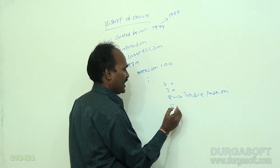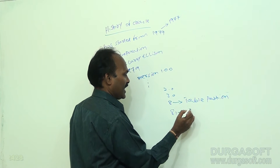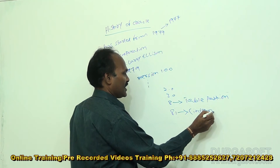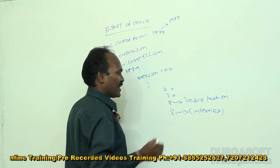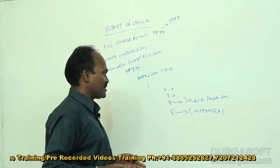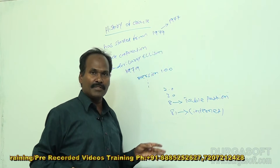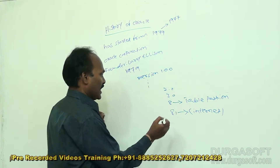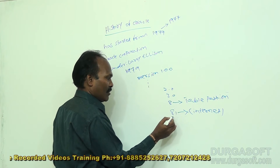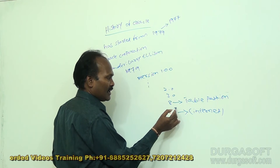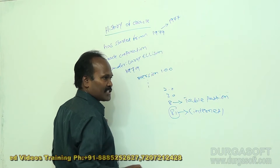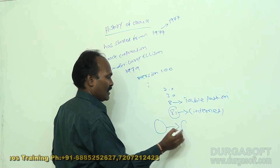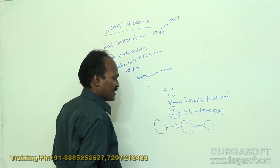After that, Oracle 8i came. In 8i, the 'i' stands for internet. The specialty of Oracle 8i is that it can read data from the web, and it also allowed deploying the database in a multi-tier architecture.